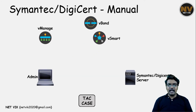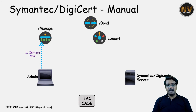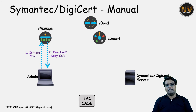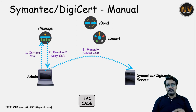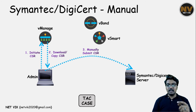The next method is manual Symantec or DigiCert. We have almost all the same components as the earlier method. The administrator logs into vManage and initiates a CSR — for our discussion, let's say it is the CSR for the vManage itself. The administrator downloads a copy of the CSR manually to his laptop and then manually submits the CSR to the Symantec or DigiCert CA server. In the last method, vManage did steps 2 and 3 automatically, but in this manual method the administrator does it.